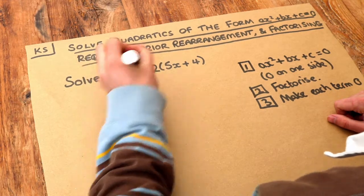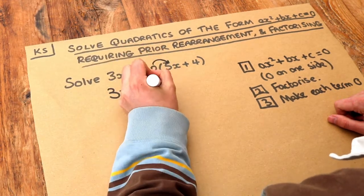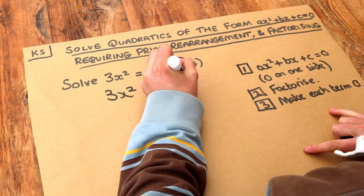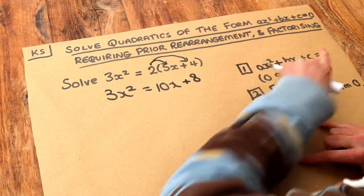So if we do that, we do the 2 times the 5X, which is 10X, and we do the 2 times the 4, which is 8. And then we want to get zero on one side.